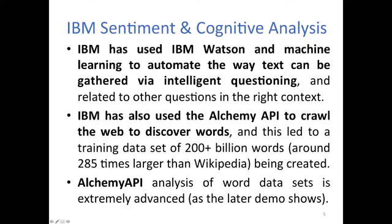IBM Watson gathers text via intelligent questioning and relates it to other questions in the right context — context is key. You can have the same answer mean completely different things in a different context. IBM has also used the Alchemy API to crawl the web to discover words, leading to a training dataset of over 200 billion words — around 285 times the size of Wikipedia.